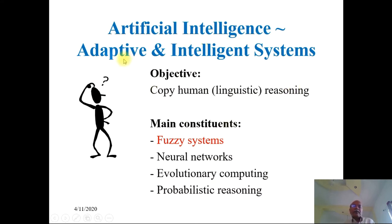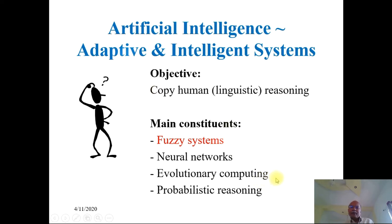In artificial intelligence, we study adaptive and intelligent systems. The objective is to copy human reasoning. All human beings reason in natural languages — it is mostly in the form of linguistic reasoning. The main constituents of artificial intelligence are: first, fuzzy systems, which we are covering in this session; second, neural networks; third, evolutionary computing or genetic algorithms; and fourth, probabilistic reasoning.